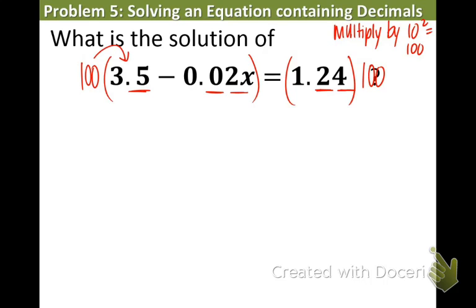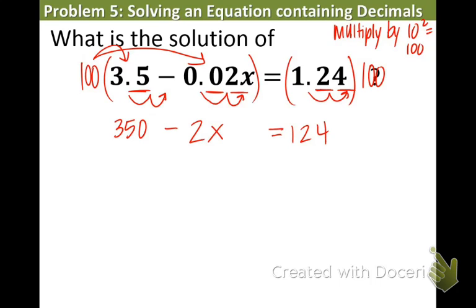And we must distribute. So, share that 100 with both terms inside. When we are multiplying by 100, all we have to do is move the decimal over twice. One, two. So, that number would be 350. Let's do the same thing for the next decimal. One, two. So, that is 2x and the last one is 124. Take a look at that line. I think that's awesome. There are no decimals left. This is a really friendly two-step equation.